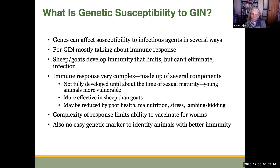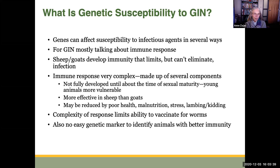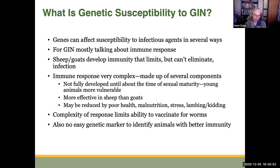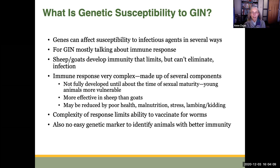The immune response is not fully developed until about the time of sexual maturity, so young animals are more vulnerable. Even into that first lambing or kidding, animals are still a bit more vulnerable at first parturition. The immune response is also more effective in sheep than in goats — goats are a bit more vulnerable to these parasites. The immune response can also be reduced by poor health, malnutrition, or stress. This complexity has always limited our ability to vaccinate for worms, which is why vaccination is not readily available and highly effective. We also don't have an easy genetic marker to identify animals with better immunity.